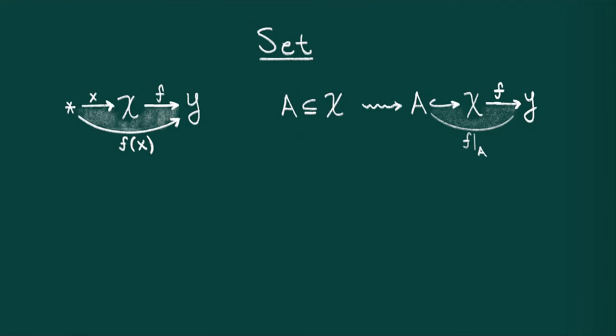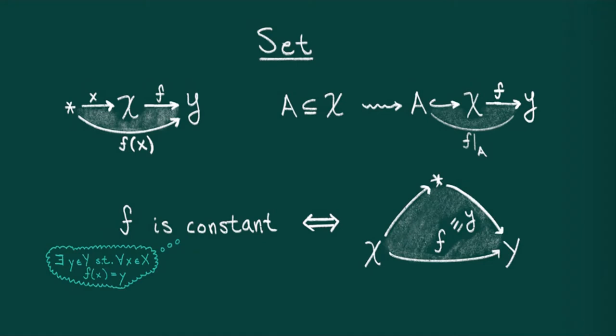A common property of a function is to say it's constant. More specifically, a function is constant if it sends every element of x to a single fixed element of y. We can phrase this categorically as follows. An element of y is just a map from a point into y. f being constant means there exists a factorization of f through a point.